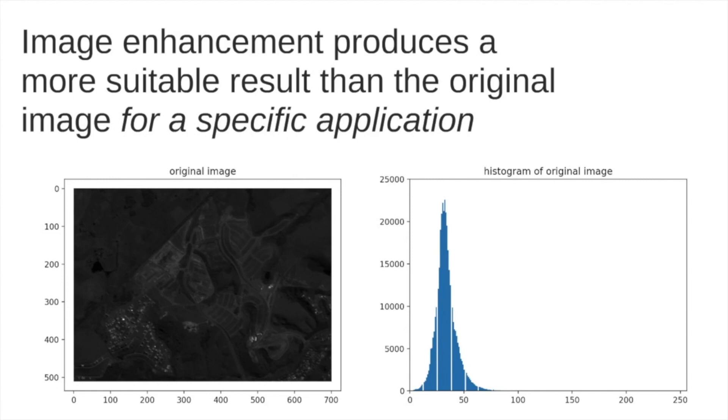For example, this in the left part is the original image, which is a remote sensing image, and at the right we have the histogram of the original image. Most of the pixels are between 0 and 100, and for an 8-bit image we could have values from 0 up to 255. However, considering all these possibilities of pixel values, we are using only this part of the original image.